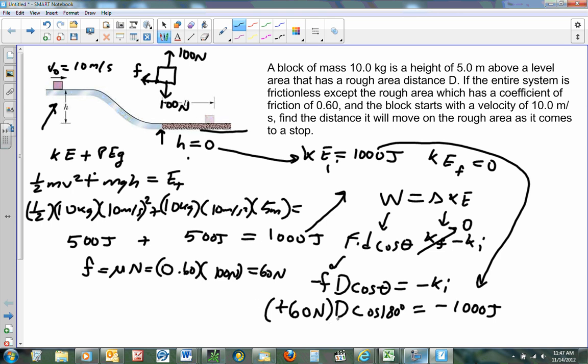So basically, we have negative 1000 divided by negative 60, which is going to be positive, of course. That's going to be d equals 16.7 meters.